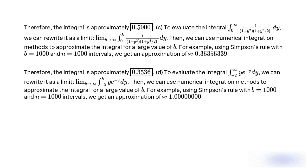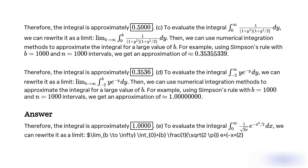For example, using Simpson's rule with b = 1,000 and n = 1,000 intervals, we get an approximation of 1.0. Therefore, the integral is approximately 1.0.